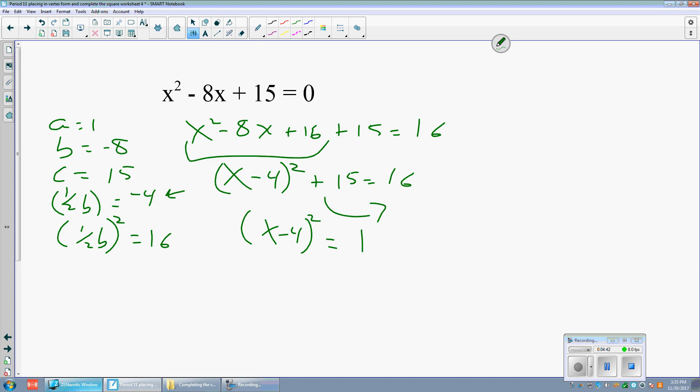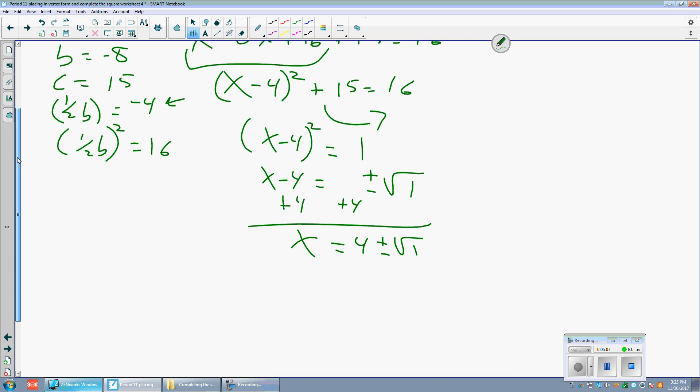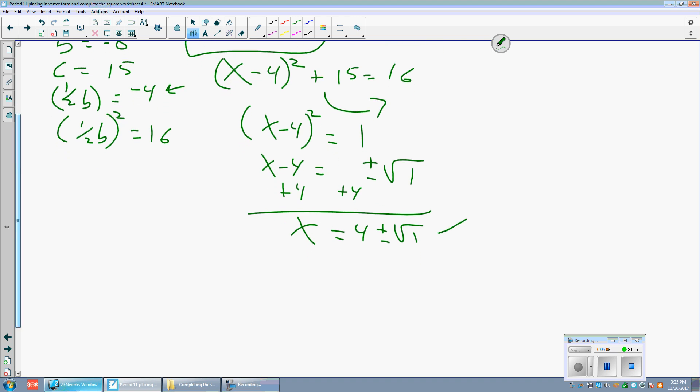Take the square root of both sides. x minus 4 equals plus or minus the square root of 1. Add 4 to both sides. Now, I told you in class that if this becomes a perfect square, you can take the square root. Most of the time, it should not. But the square root of 1 is 1. So x equals 4 plus 1 and x equals 4 minus 1. 4 plus 1 is 5. 4 minus 1 is 3. So those are our two answers.